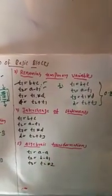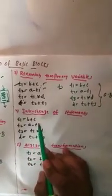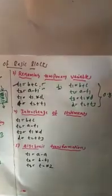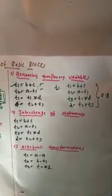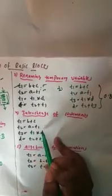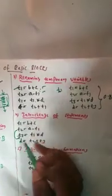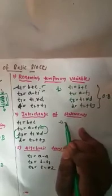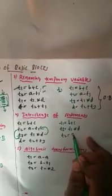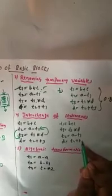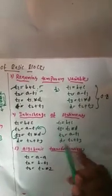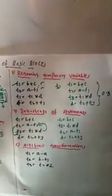The fourth approach is interchange of statements. We have four statements: T1 equal to B plus C, T2 equal to A minus T1, T3 equal to T1 into D, and D equal to T2 plus T3. Since T3 depends only on T1, we can interchange the second and third statements. The result is: T1 equal to B plus C, T3 equal to T1 into D, T2 equal to A minus T1, D equal to T2 plus T3.